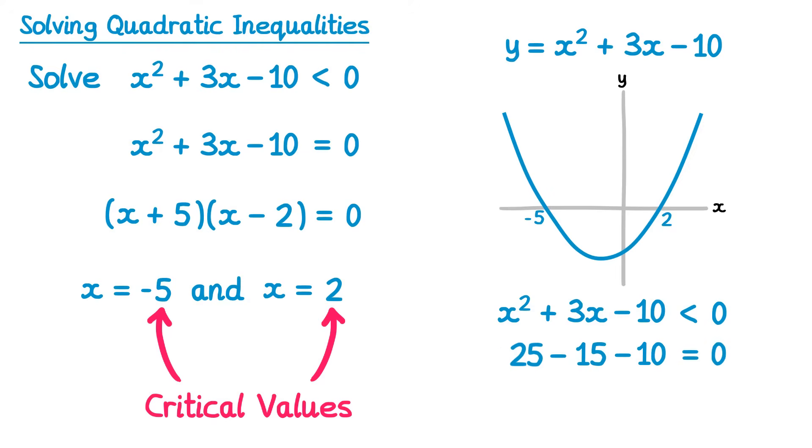This shouldn't be surprising since they were solutions to the equation, but we're not interested in when it equals 0, we want to know when it's less than 0. So if we now look at the graph, you can see the graph is split into three sections. The first section here, where the graph is above the axis, we then have this middle section, where it's below the axis, and this final section where it's above the axis again.